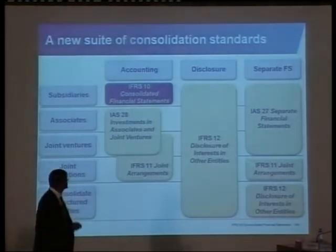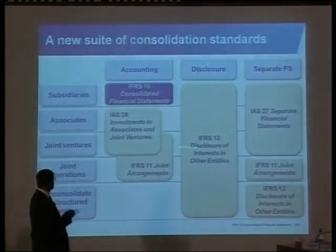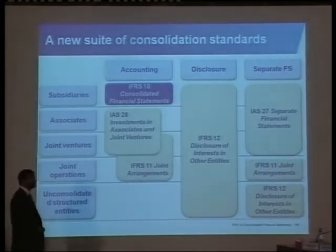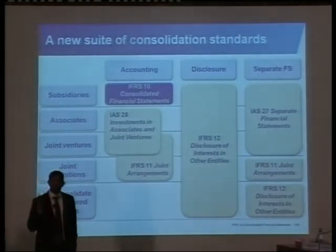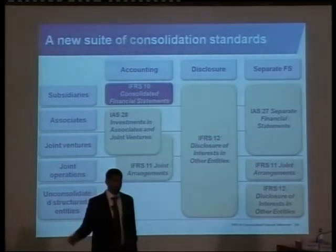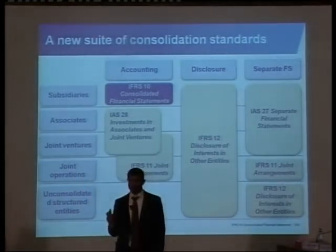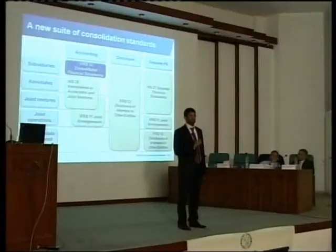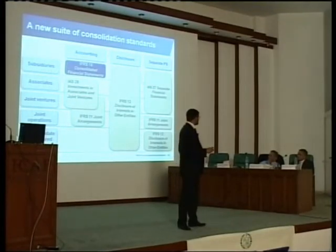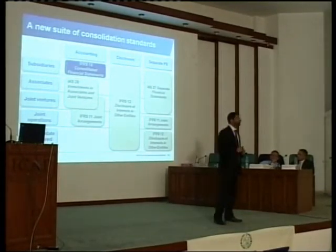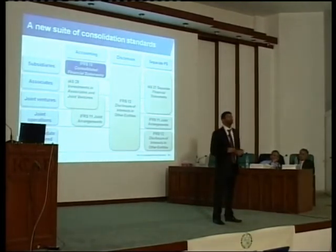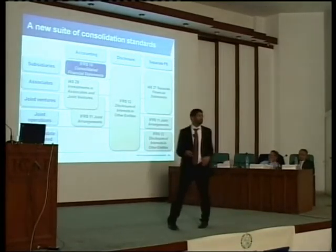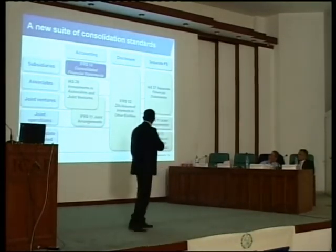IFRS 12 deals with disclosures of entities that you control, with associates, with joint ventures and joint operations, and it also deals with something called unconsolidated structured entities. These are the SPVs you created and managed to avoid consolidating — they were unconsolidated structured entities. Or they are entities which you have provided funding to, like a scholarship trust where you are subject to variability in returns. Those are unconsolidated structured entities. Tell us about it — that's what IFRS 12 is saying.